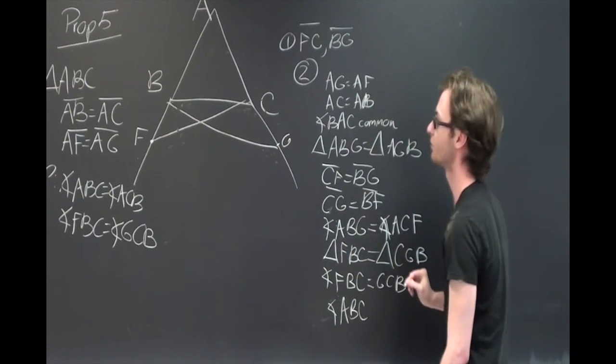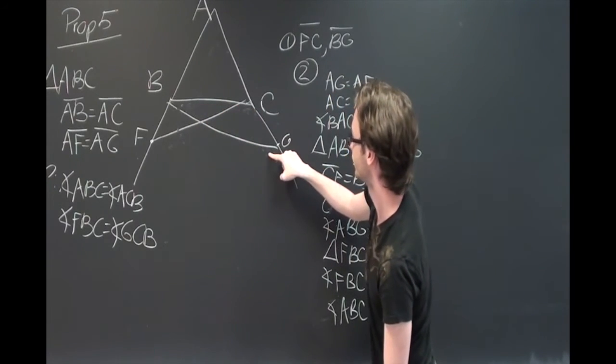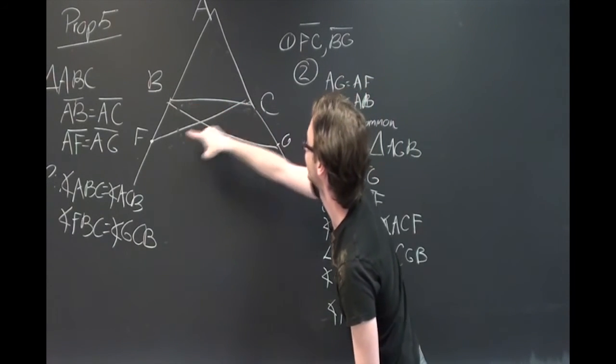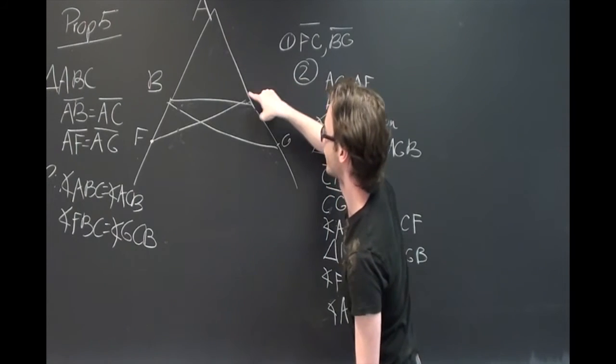And when we do the same with the other side, we have angle BCG, we subtract from angle BCF, and we are left with angle ACB.